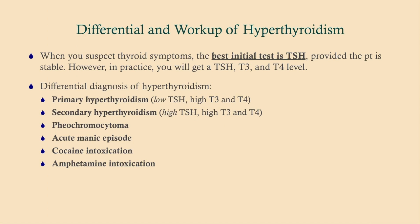So your differential. Remember that when you suspect thyroid symptoms, either hypo or hyper, the best thing to do is get a TSH. Certainly you're going to get a free T4 level, and you may get a T3 level, but the TSH is probably the most important. If they ask you what's the best next step in the diagnosis of this patient, it's going to be TSH. But if you're taking CCS, you're going to get your TSH and free T4 at the same time — you're not going to wait. The differential for hyperthyroidism includes primary and secondary hyperthyroidism.